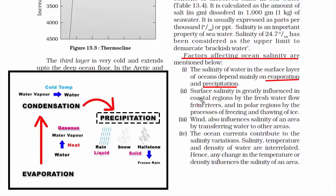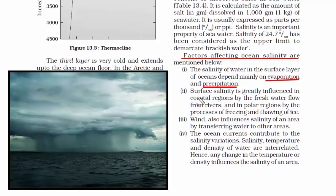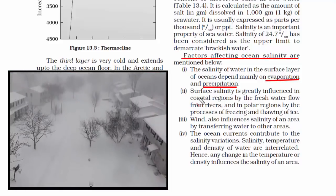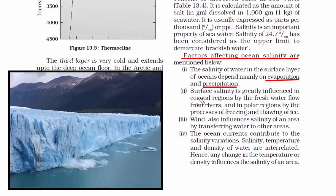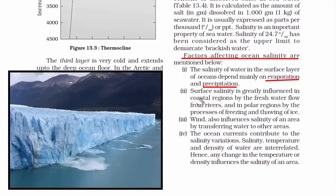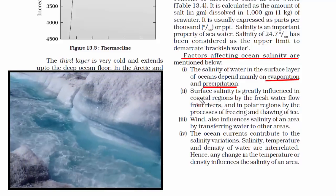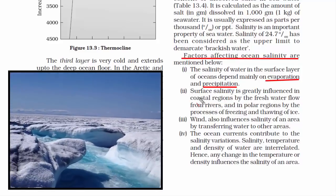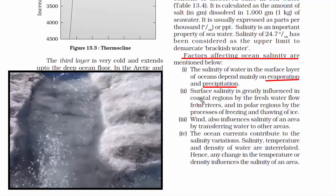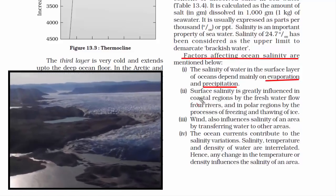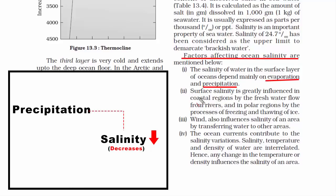Coming to precipitation — meaning rainfall and snowfall — precipitation can decrease the level of salinity in the ocean. Heavy rainfall brings fresh water with small quantities of salt into the ocean, reducing salinity. Similarly, melting of snow and glaciers creates fresh water that flows through river channels and drains into the sea. Rivers flowing into a specific ocean body reduce its salt concentration. Therefore, precipitation decreases the salinity of ocean water.